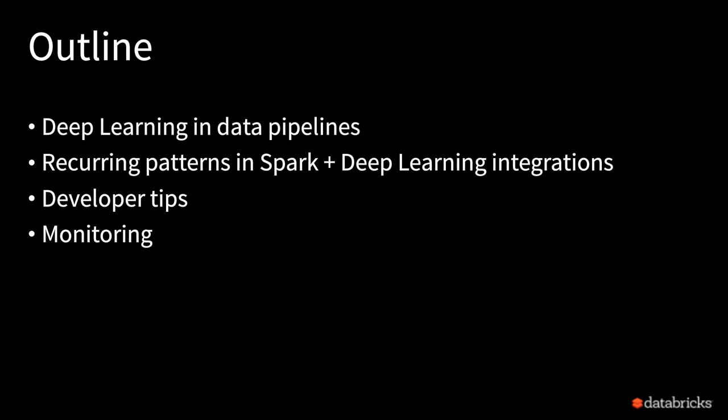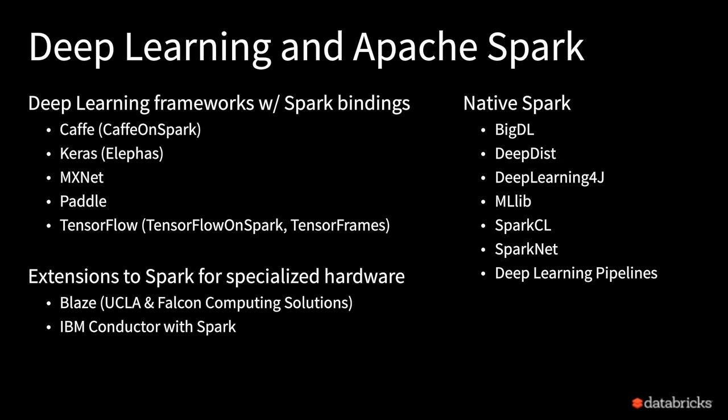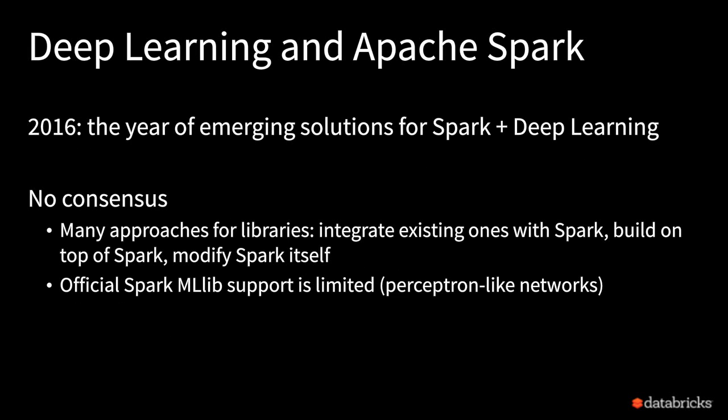Let's start with an overview of the field. Looking at what happened in recent years, really starting in 2016, we have seen an explosion of solutions that try to combine Spark and deep learning. Why would people want to do that? A lot of data is being processed by Spark — it is a popular project for running large-scale ETL, data cleaning, and data processing systems. Deep learning is now one of the de facto standards for running complex machine learning tasks, especially in image processing, speech recognition, machine translation, and so on. However, there is clearly no consensus on how to combine these two technologies together.